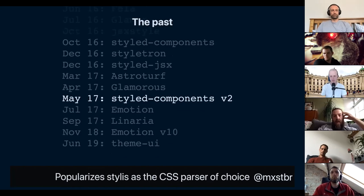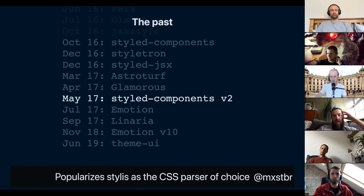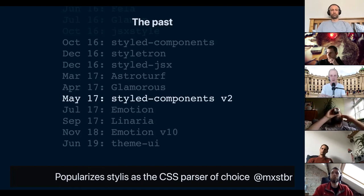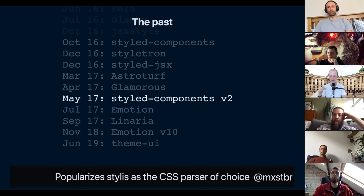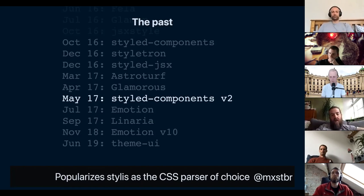In May of 2017 with Styled Components v2, we discovered that a developer called Thay Sotan had written a tiny, super fast, and super correct CSS parser in JavaScript called Stylis. Before that, we were shipping PostCSS to the browser, which is literally 50 kilobytes minified and gzipped — way too big. We switched to Stylis with v2 and since then basically all CSS-in-JS libraries have switched to using it. Huge shout-out to Thay Sotan because without him, CSS-in-JS would only be a quarter as performant as it is nowadays.